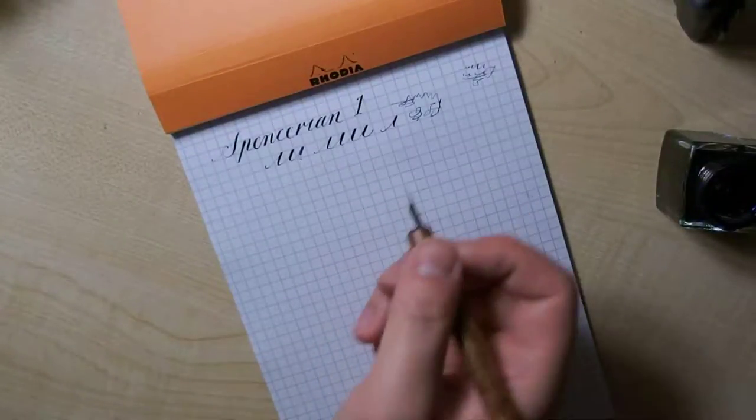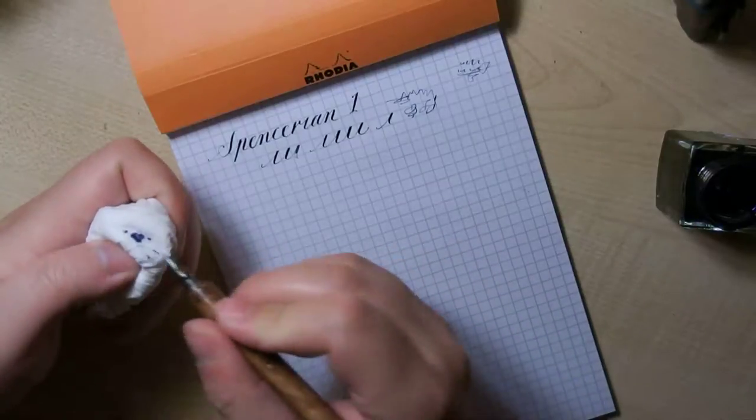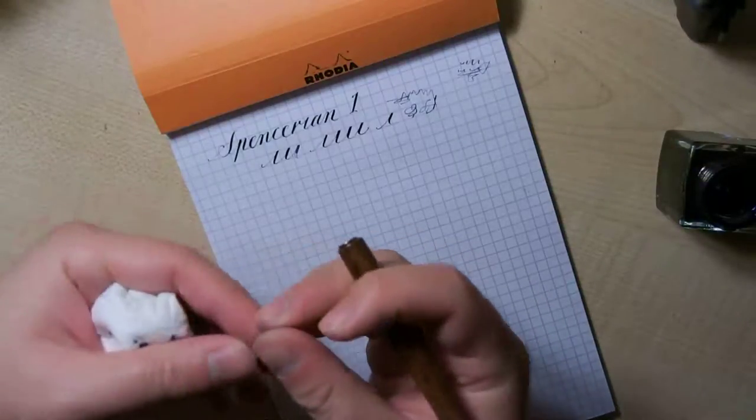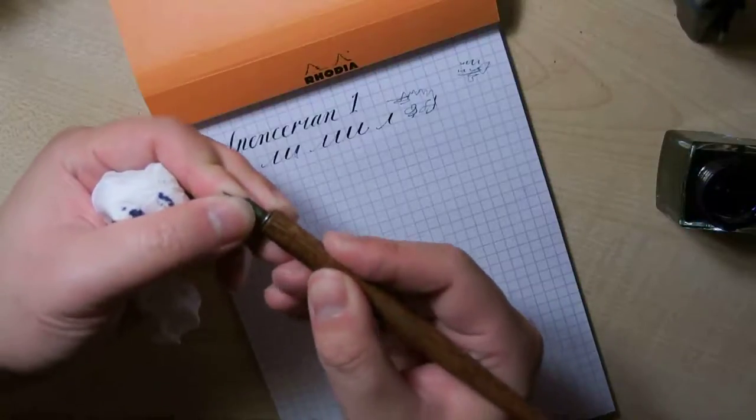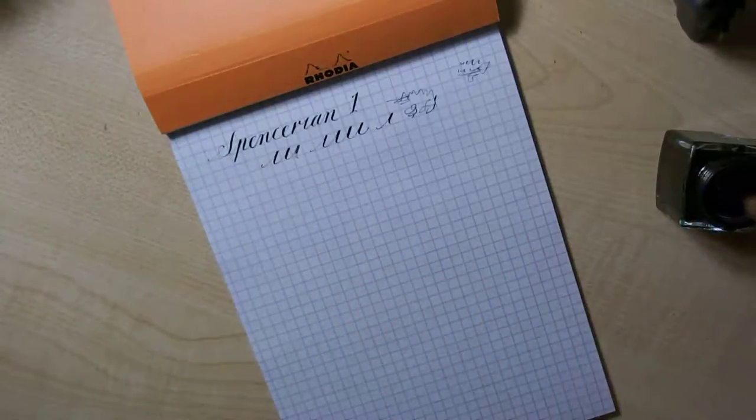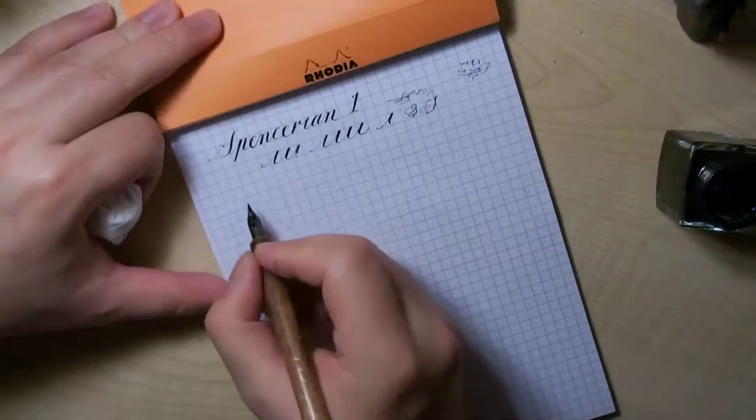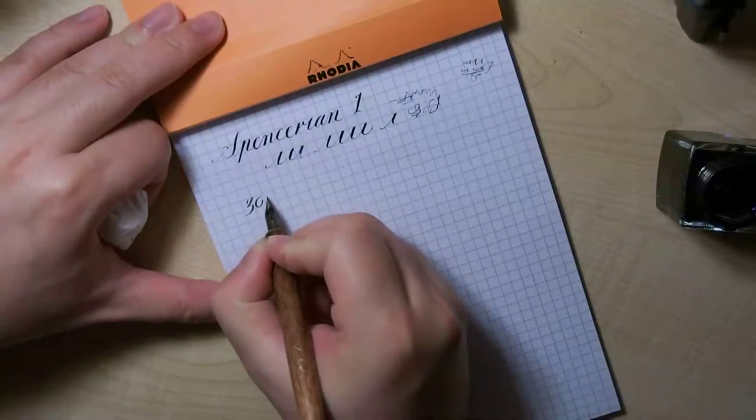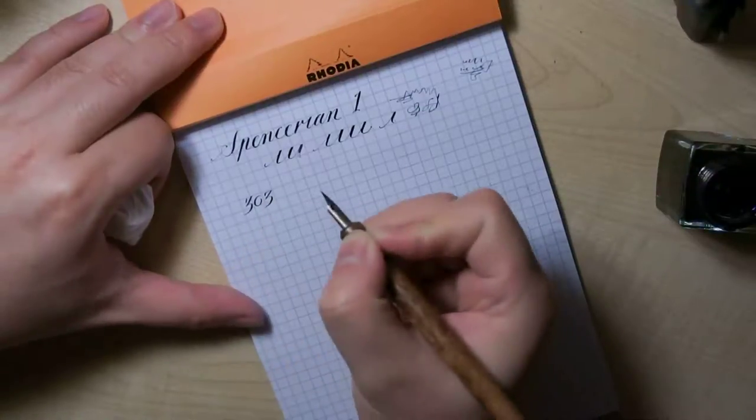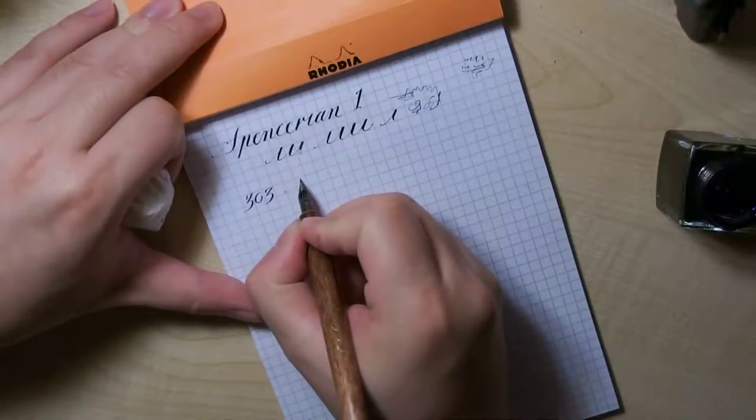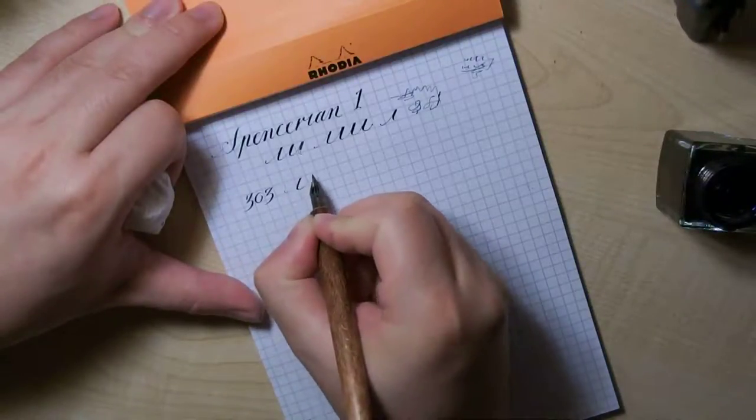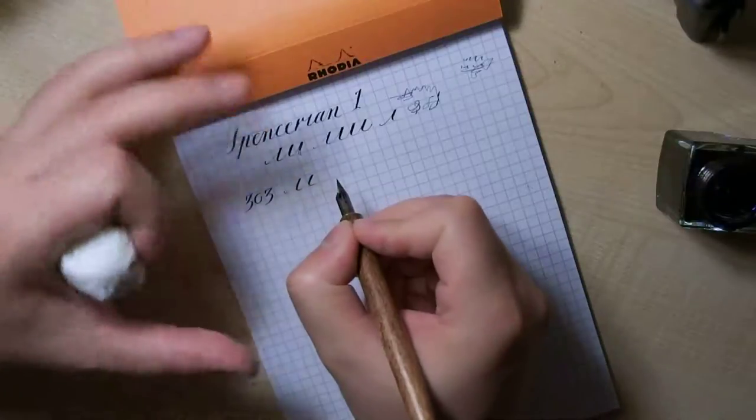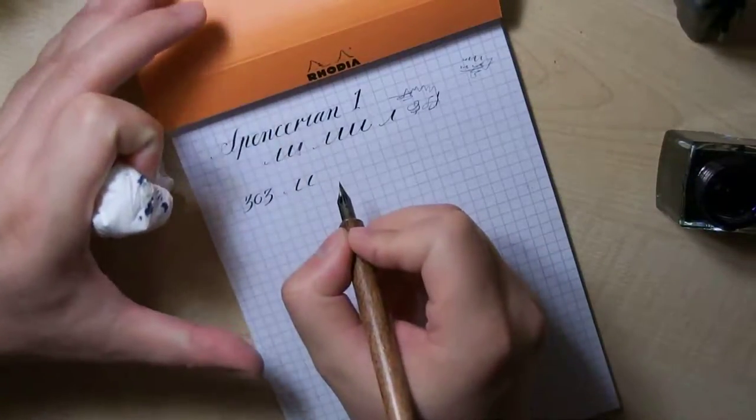Next one I'm going to demonstrate is the 303, this is another one of my favorites. Now the thin line on this one is thinner than Spencerian number one and it is even more flexible than Spencerian number one, but the thick line is not as thick. So it's softer but it's not wider.